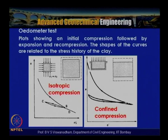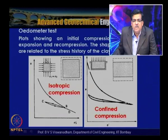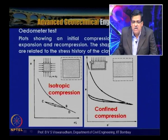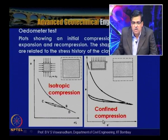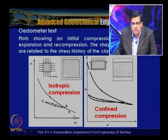The e vs. sigma-dash curves from the oedometer test are shown, comparing isotropic compression (sigma_1 = sigma_3, compressed equally in all directions) with confined compression (laterally restrained, deformation only vertically). These show distinctly different e–sigma-dash plots. In confined compression, the sample undergoes compression, unloading, and reloading cycles.